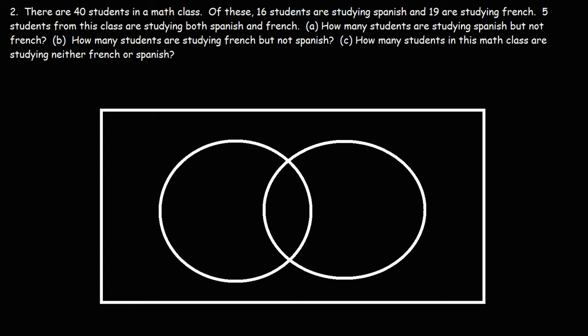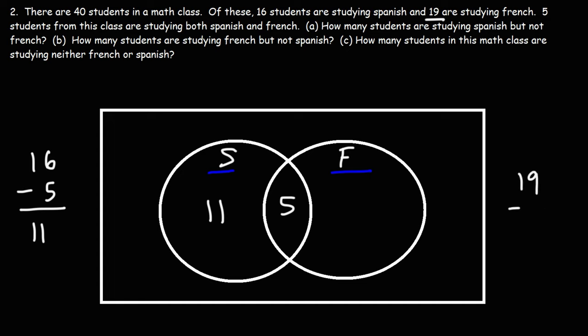Part A: How many students are studying Spanish but not French? Let's put S for Spanish and F for French. The first thing I do is put the number studying both in the middle — that's 5. Now, we have 16 total studying Spanish. Five are studying both, so the difference gives us those studying only Spanish but not French — that's 11. Part B: How many students are studying French but not Spanish? We have 19 studying French total, minus 5 studying both, so 14 are studying French only.